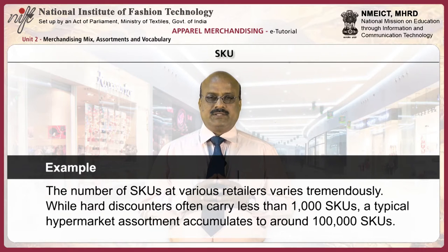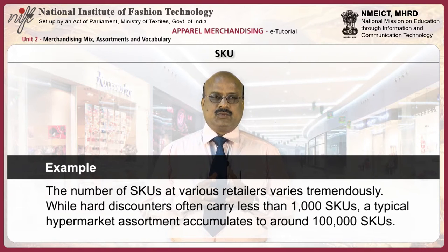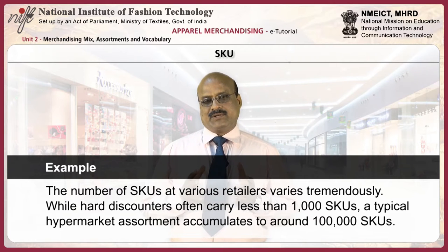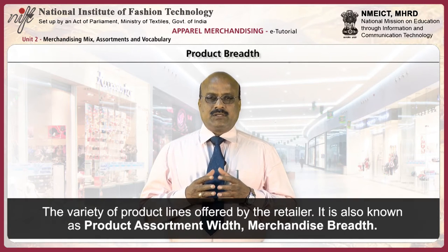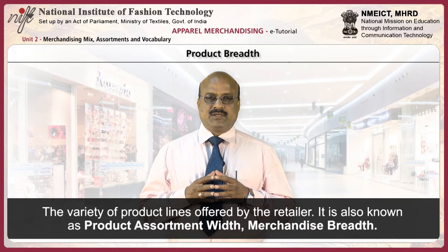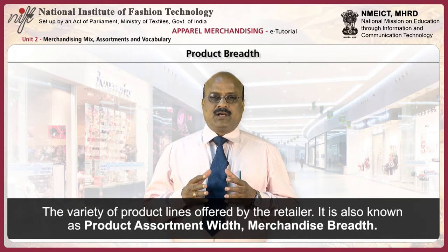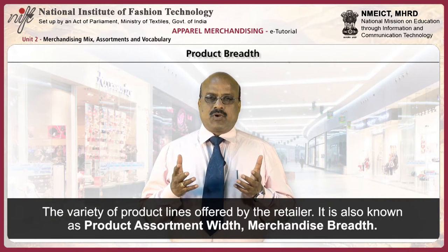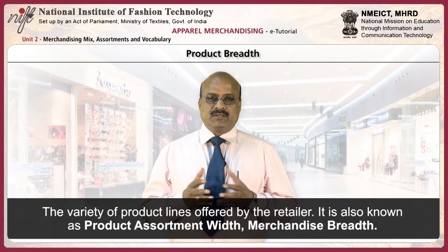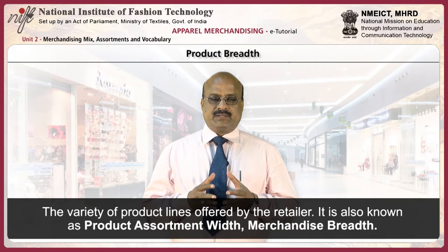The number of SKUs at various retailers varies tremendously. While hard discounters often carry less than 1,000 SKUs, a typical hypermarket assortment accumulates to around 100,000 SKUs. Product breadth is the number of different styles of product lines offered by the retailer, also known as product assortment width or merchandise breadth.